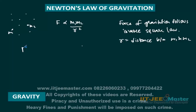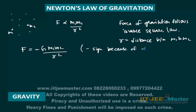Taking the proportionality constant G, the formula becomes F = G M1 M2 upon R squared. We should include a negative sign because the gravitational force is an attractive force — it is always attractive. If we talk only about the magnitude, the negative sign is not needed. We have written this in scalar form; now let us see the vector form.